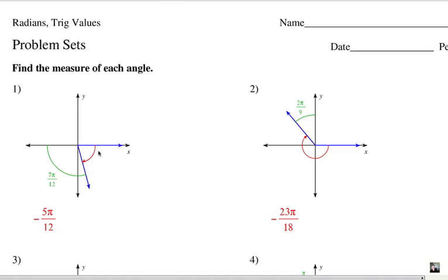So on number 1, notice how we're starting here at the 0 point, but we're going backwards. So that's a negative angle measure. And we're not going the complete half turn there, which would be 12π over 12. We are shy 7π over 12. So that's why it's got to be a negative 5π over 12. That's this part of the angle. And number 2, again, we're going negative here.